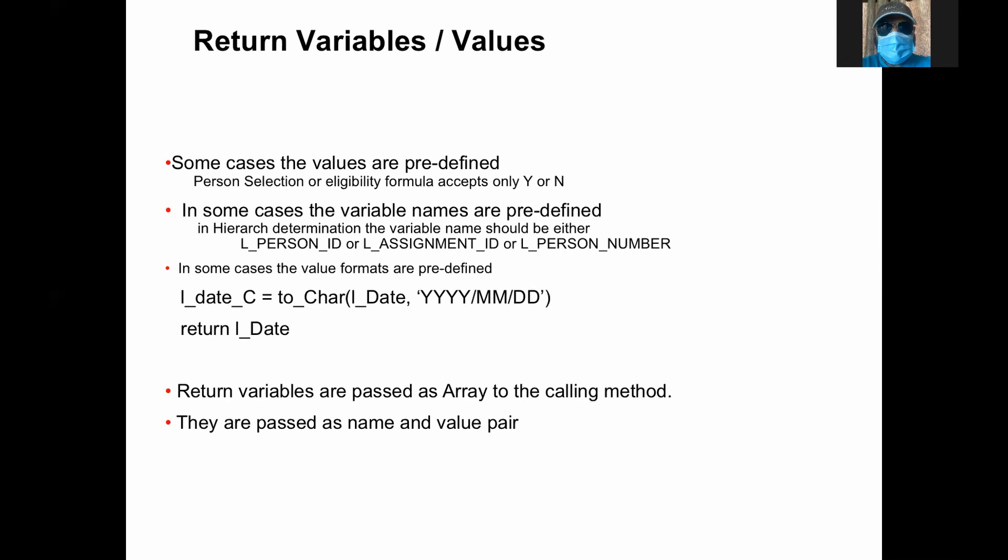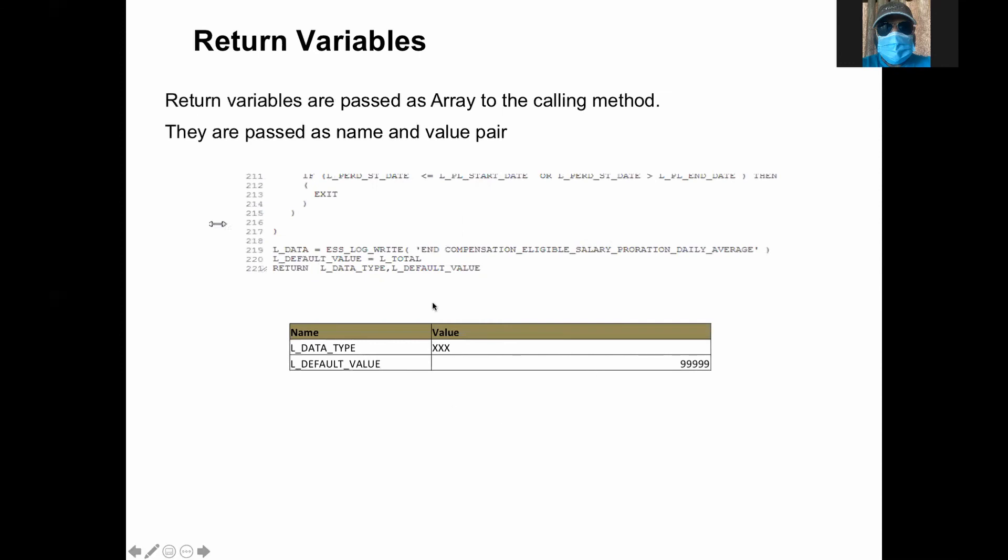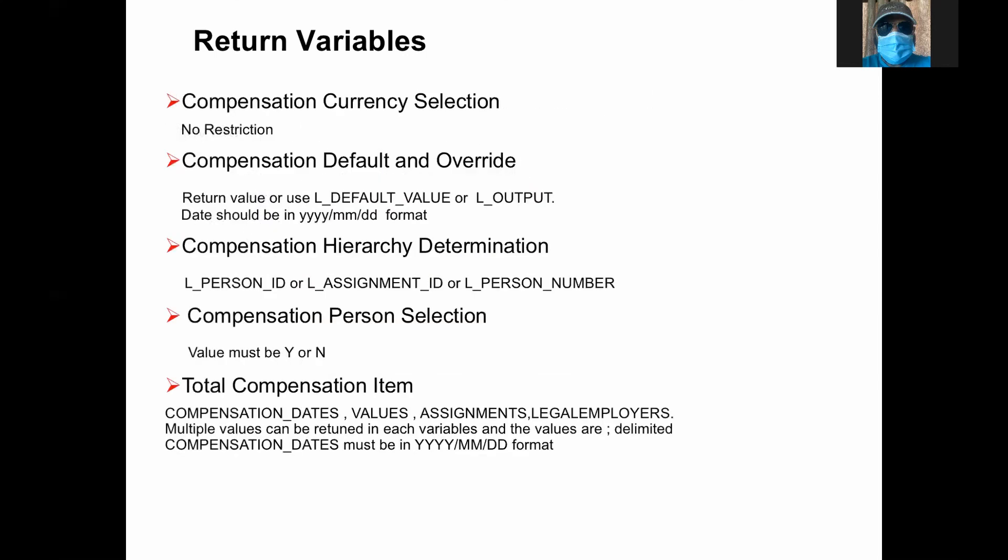The return variables are passed to the system as an array. This is basically name and value pair. This is more technical information. Just for your understanding, for example, in this formula you pass the L data type, L default value as a value. But what internally you pass to the information is array. The name is this one, and the value is this one. And the name and value pair is passed to the calling program. Then they handle that. They know how to handle that. So this is just for understanding purpose.